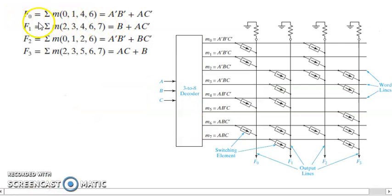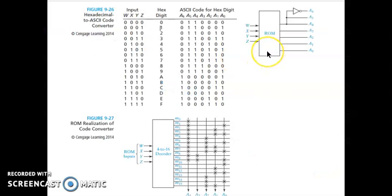Multiple output combinational circuits can be easily implemented in ROM. We will look at an example where the code is converted from binary to hexadecimal. Multiple output functions can be easily implemented with ROM.